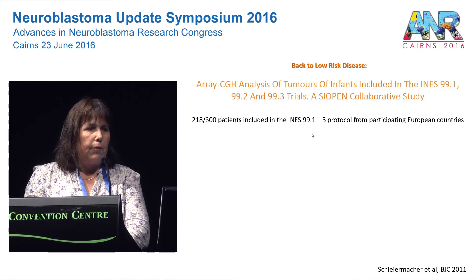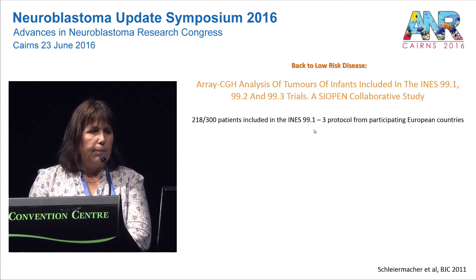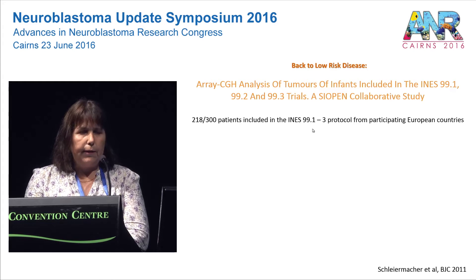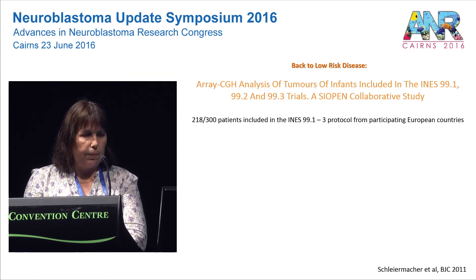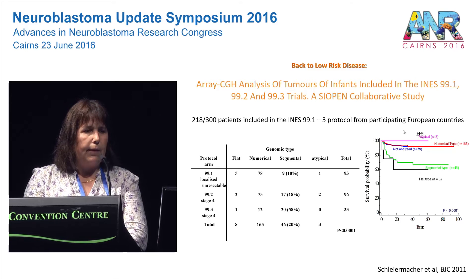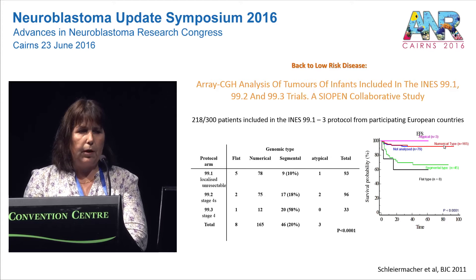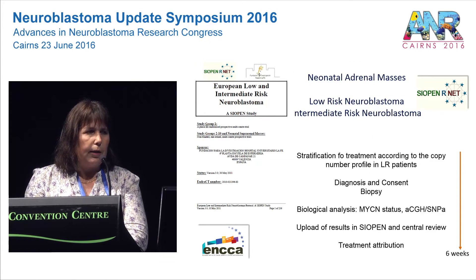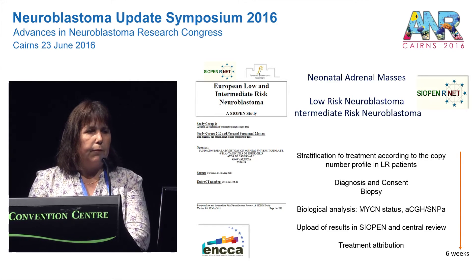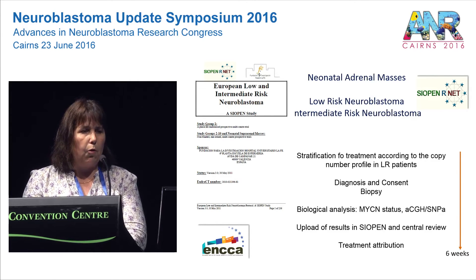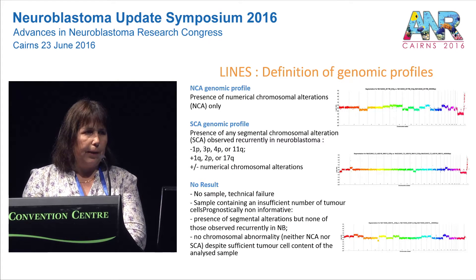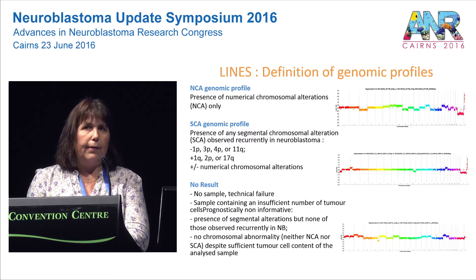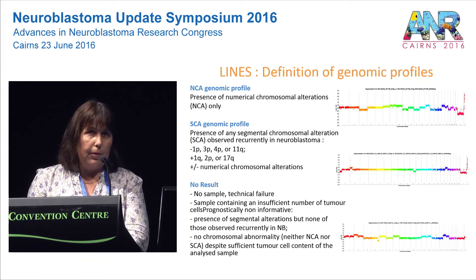When moving on to the treatment of infants, how can this information be integrated? Looking at the aCGH profile of infants included in the European trials, patients with numerical chromosome alterations had a much better event-free survival than those with segmental chromosome alterations. This led to the construction of our European trial termed LINES, where we integrate aCGH information into a global risk stratification to then adapt therapy. The challenge is to realize aCGH or genomic profiling in a prospective setting in real time in multinational trials.